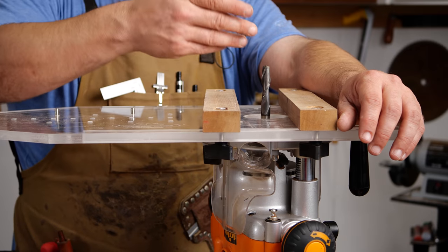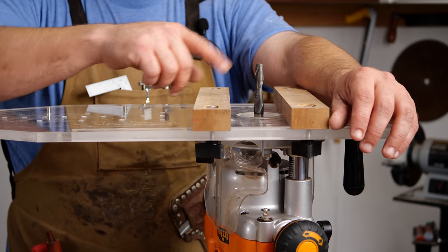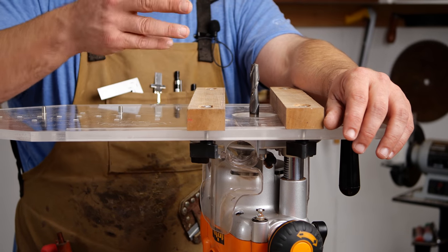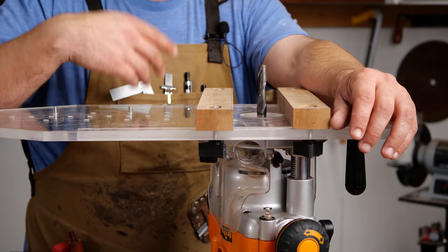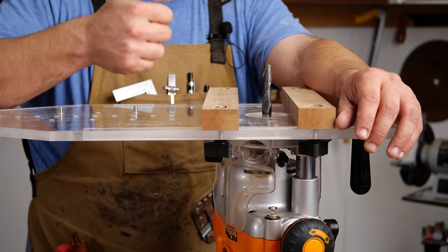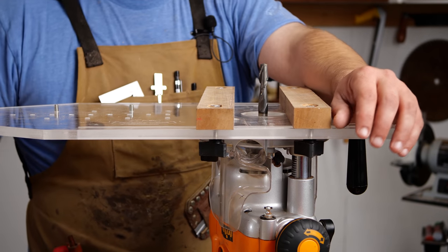The reason I like to use an upcut bit is one, because you need to clear chips on a mortise, otherwise everything is going to get real hot in there and you could ruin the life of your bit or burn your wood. But also a spiral bit as opposed to a straight bit is a lot better at cleaner cuts and removing material. So we're going to go ahead and set this up and then we'll head over to the table saw and cut our tenon.